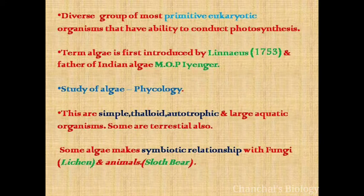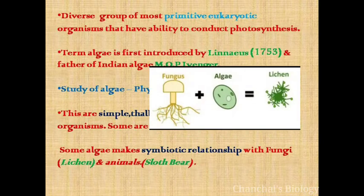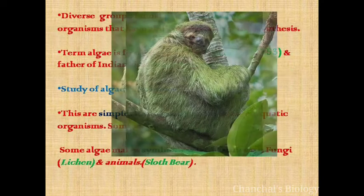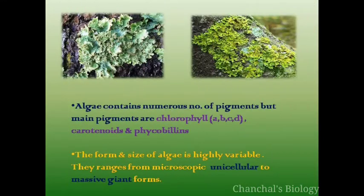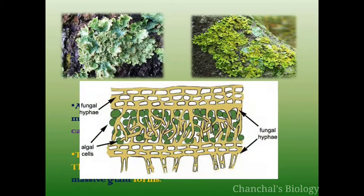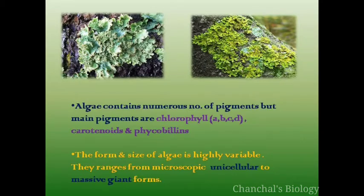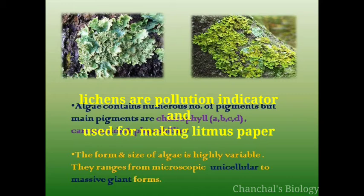Some algae occur in association with fungi, called lichens. And some occur with animals like the sloth bear, a lazy animal which spends most of its time in trees. Lichens are a symbiotic relationship of algae and fungi, in which fungi provide increased water and nutrient absorption, and algae provide food to the fungi. These lichens are pollution indicators and their extract is used in litmus paper.